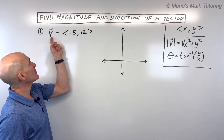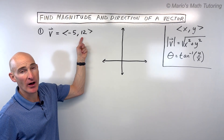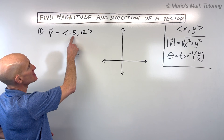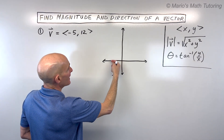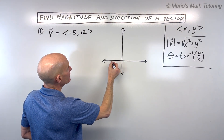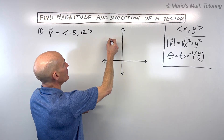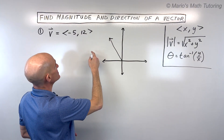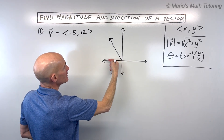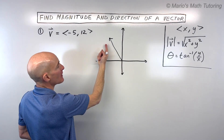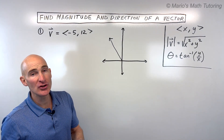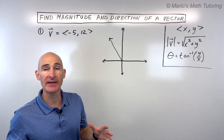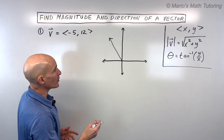We're given this vector here, negative 5 comma 12, and let's graph that just so we can take a look at what this looks like. So this is 5 in the negative x direction, so we're going left 5, up 12. If I draw an arrow to represent that vector, this is the horizontal component, negative 5, and the vertical component, positive 12. What we want to do is find the length, which represents the magnitude or how strong that vector is, if it was like a force.